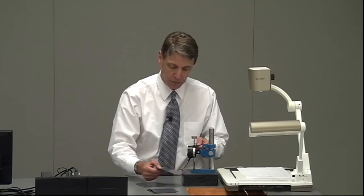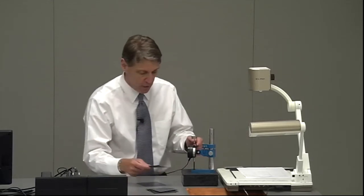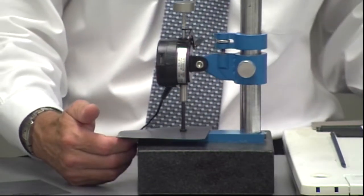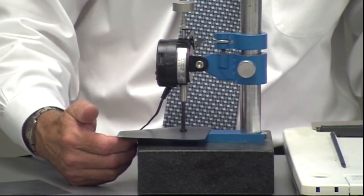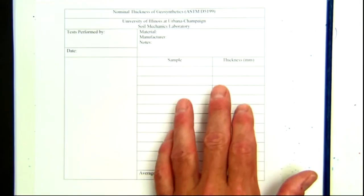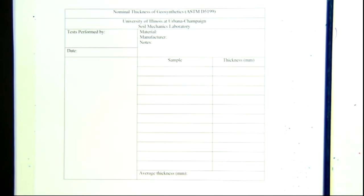That specimen is removed. The fourth specimen is inserted. These values are recorded on a data sheet like the one that's shown over here. There are 10 specimens, and the thickness is placed in this column, and then an average is taken of the 10 measurements. The fourth thickness is 0.728 millimeters.